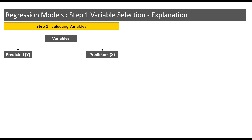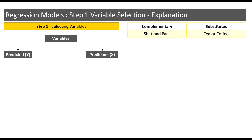Before delving into this topic I want to introduce two terms: complementary and substitutes. An example of complementary is shirt and pant. When we buy a shirt we usually end up buying a pant also. Hence we can say that these two products are complementary.